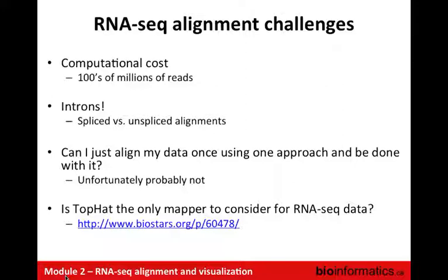A common question is: can I just align my data once using one approach and be done with it? Unfortunately the answer is probably not. Certain alignment strategies are more suited to certain downstream applications — for expression analysis you might align one way, for RNA fusions you may need to align differently. It's very difficult to create one alignment equally good for all purposes. Similarly, TopHat is not the only mapper to consider for RNA-seq data — there are many aligners, and you can check out Biostars discussions to learn what the community has found about how different aligners behave.